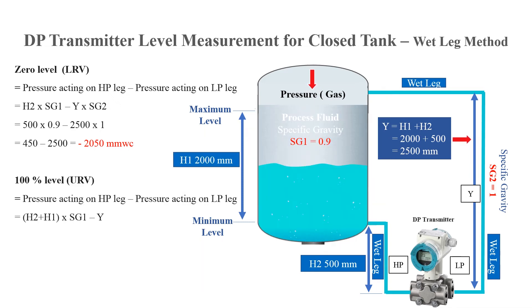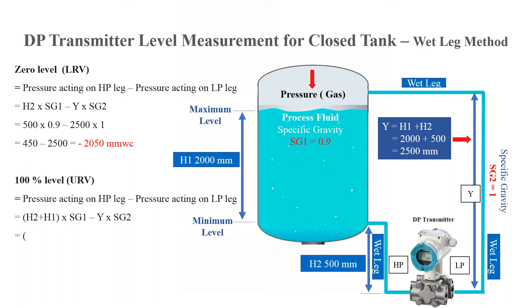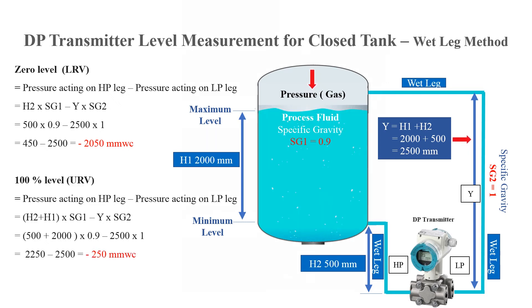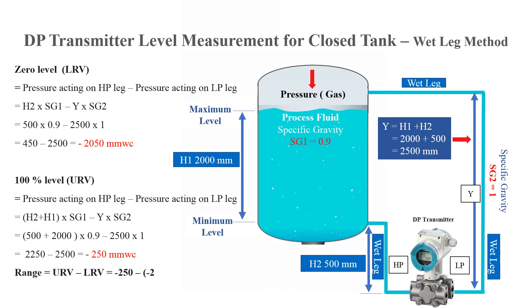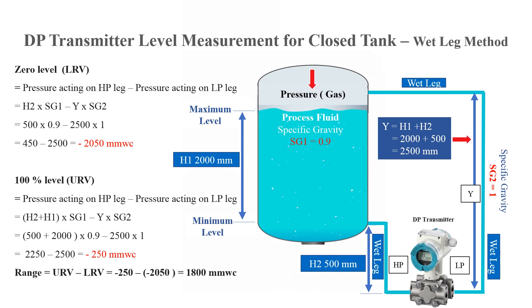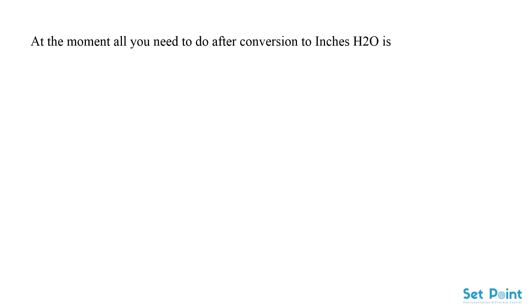The upper range value: h2 plus h1, multiplied by sg1, minus y multiplied by sg2. The result will be minus 250 millimeter water column. Delta P equals upper range value minus lower range value equals 1800 millimeter water column. After conversion to inches H2O, set these values into the transmitter.